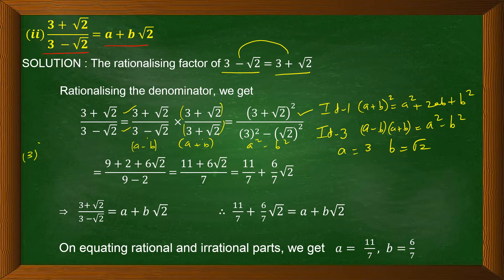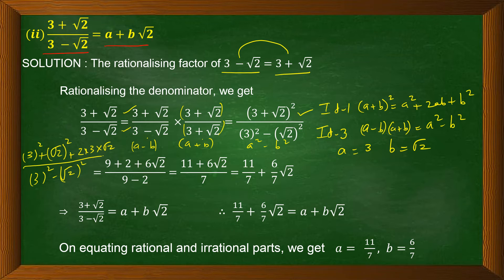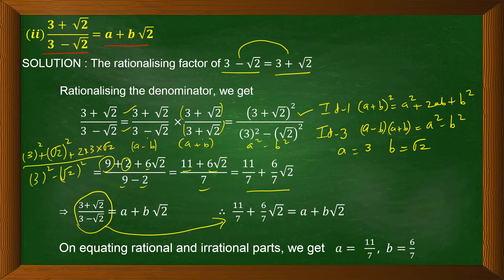Using Identity 1 in the numerator: (3 + √2)² = 3² + (√2)² + 2·3·√2 = 9 + 2 + 6√2 = 11 + 6√2. Using Identity 3 in the denominator: 3² − (√2)² = 9 − 2 = 7. So we get (11 + 6√2) / 7, which can be written as 11/7 + (6/7)√2. Comparing with a + b√2, we find a = 11/7 and b = 6/7.